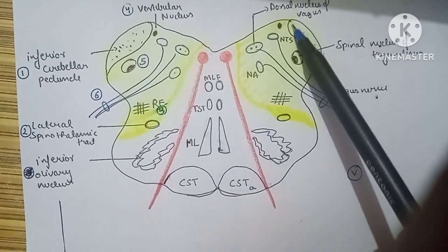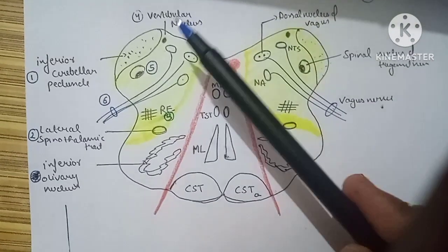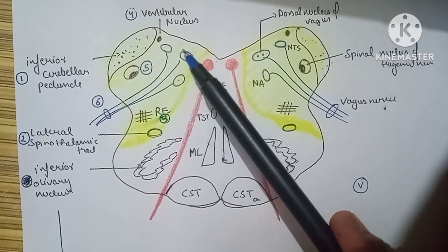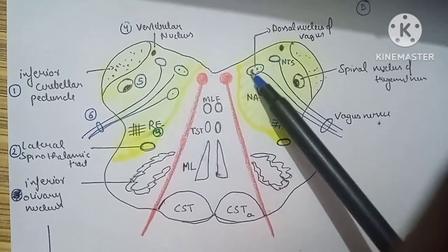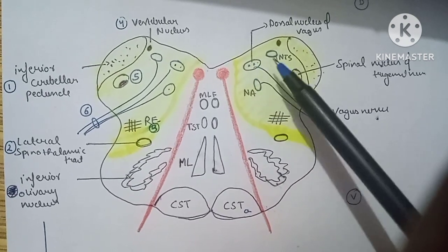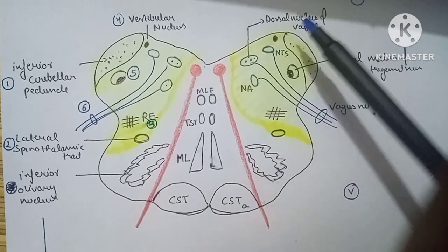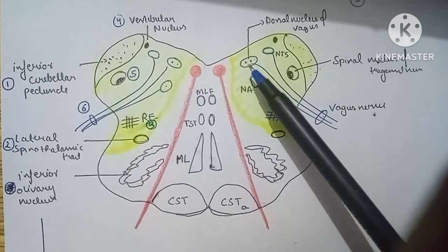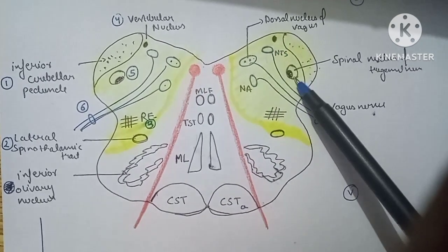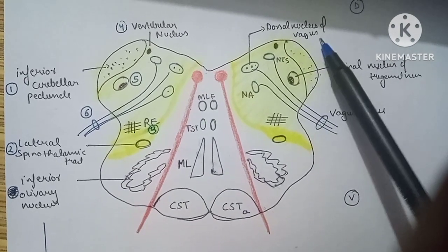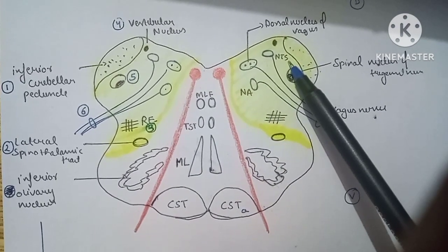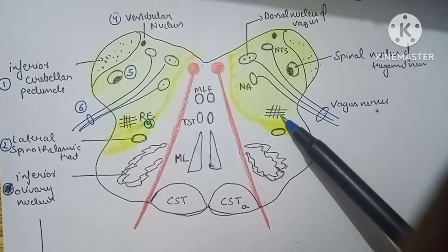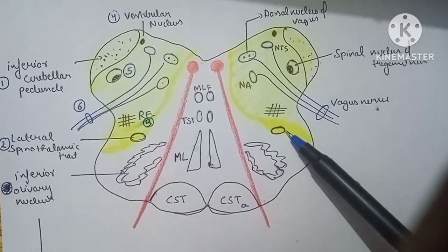Starting with the lateral structures: this is the inferior cerebellar peduncle, which connects the medulla to the cerebellum. The three nuclei present laterally are the dorsal nucleus of vagus, the vestibular nucleus, and the spinal nucleus of the trigeminal nerve. The dorsal nucleus of vagus, along with nucleus ambiguus and nucleus tractus solitarius, forms the vagus nerve. Other structures to remember are the reticular formation (part of the reticular activating system) and the lateral spinothalamic tract.